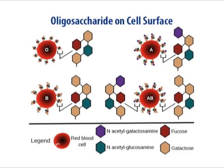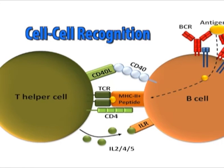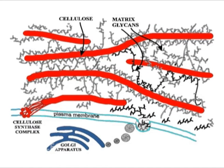Following vesicular transport, they are correspondingly localized to the exterior half of the plasma membrane, with their polar head groups exposed on the cell surface. In plant cells, the oligosaccharide portions of glycolipids are important surface markers in cell-cell recognition. The Golgi apparatus also serves as the site where complex polysaccharides of the cell wall are synthesized.